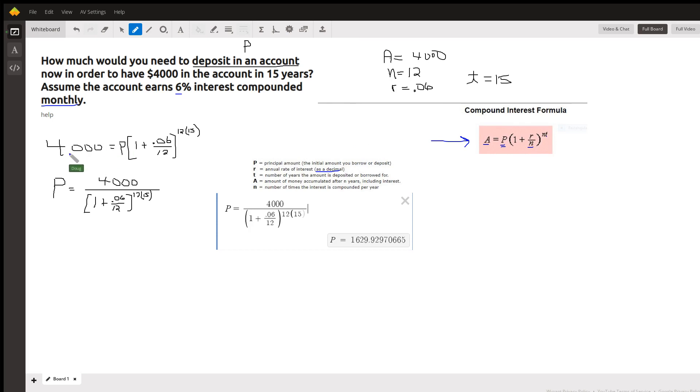So all we want to do is substitute these amounts into this formula, so A, 4,000 equals P times 1 plus 0.06 divided by 12, raised to the, this is supposed to be a 15, hard to see, and you can divide by the coefficient of P right now, which is this expression, so there's P right there.